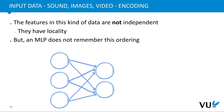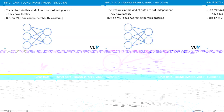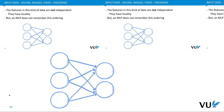Beyond the size argument, another key issue is that the features in image data are not independent of each other — they have a locality. If one pixel is next to another, that spatial relationship has meaning. But an MLP does not account for this ordering. Whether a node is here or elsewhere, or whether you mix up the nodes, the MLP does not remember their ordering.